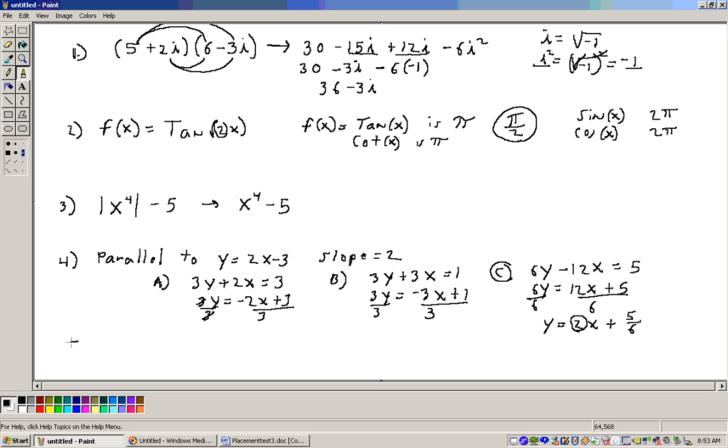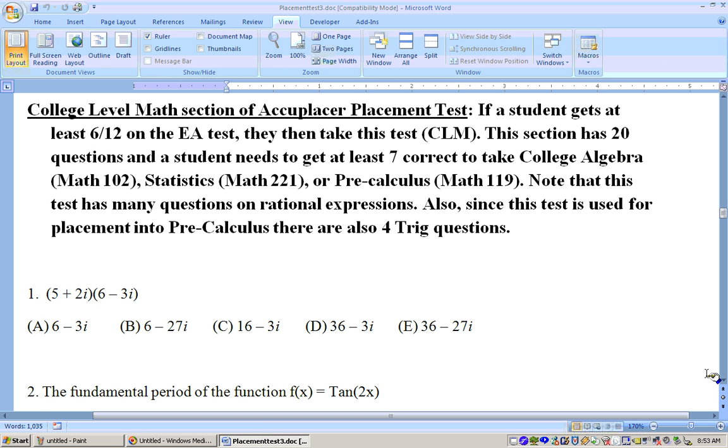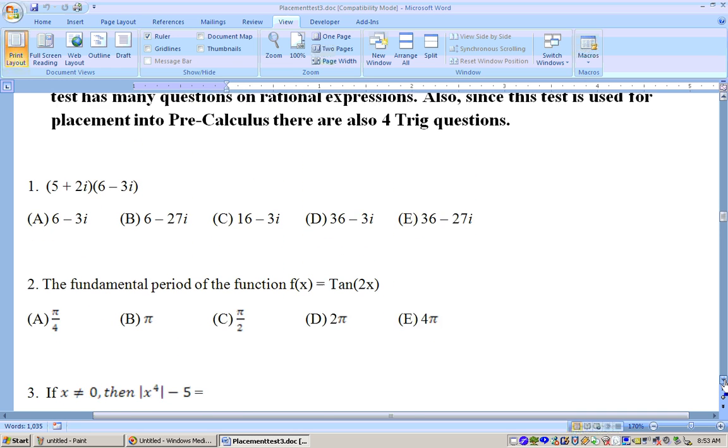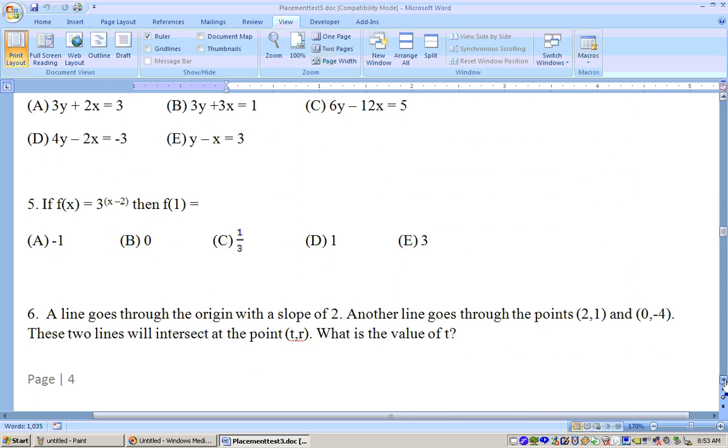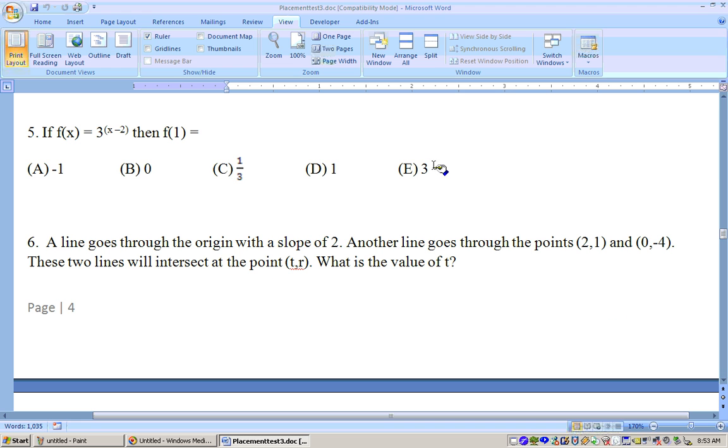Okay, let's go ahead on to 5 here. And we'll take a look here at the questions here that we had. So there's problems 1, 2, 3, 4, and here's 5. 5 says for f of x equals 3 raised to the x minus 2, then what is f of 1? Well, let's go ahead and do that problem.